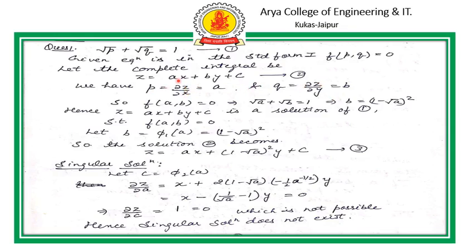We differentiate with respect to Y and find ∂Z/∂Y equals Q equals B. So we have P equals A and Q equals B. Substituting P equals A and Q equals B in equation number 1, we get the relation: root of A plus root of B equals 1. Now we find the value of B in terms of A. Putting B equals (1 minus root of A) squared into equation number 2, we get result 3.